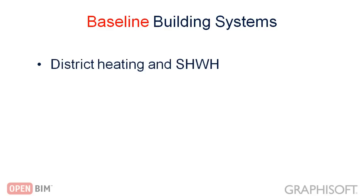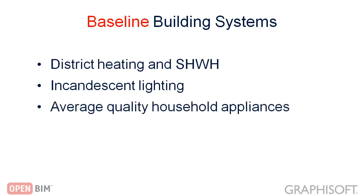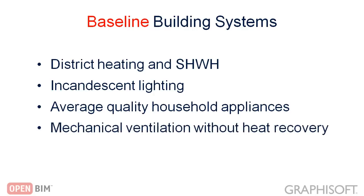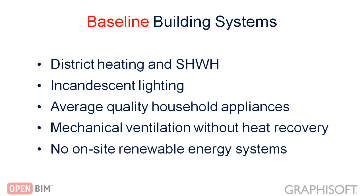Let's continue by adding building systems to the baseline building. Similarly to its building envelope, the baseline building systems also represent mediocre solutions, typically used in the region where the project is located: District heating, conventional incandescent lighting, average quality water taps, natural and mechanical ventilation without a heat recovery option. Electricity is supplied from the grid. No on-site renewable energy systems are defined for the baseline building.